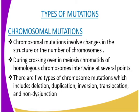There are five types of chromosome mutation, sometimes called chromosome aberrations. They are: deletion, duplication, inversion, translocation, and non-disjunction. Let us discuss each.